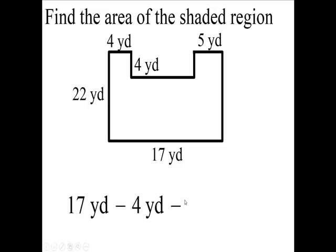We'll subtract the five and that's going to be this length right here. Now 17 minus 4 is 13, 13 minus 5 is 8, so now we know how long it is from here to here. It's eight yards, let's label that.